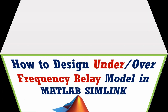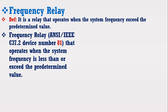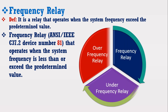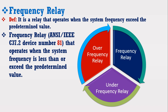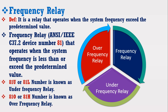Frequency relay can be defined as a relay that operates when the system frequency exceeds the predetermined value. According to American National Standard Institute and IEEE standards, frequency relay is assigned with device number 81. It operates when the system frequency is less than or exceeds the predetermined value. Frequency relay has two types: under frequency relay and over frequency relay. 81U or 81L is known as under frequency relay, whereas 81O or 81H is known as over frequency relay.